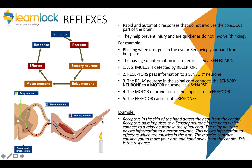A common example is moving your hand away from a hot plate or a candle, as shown here. The receptors in the skin detect the change in heat — the stimulus. They pass a message along a sensory neuron, which connects to a relay neuron in the spinal cord, which connects to a motor neuron, which goes to the muscle. The muscle then contracts and you move your hand away quickly.